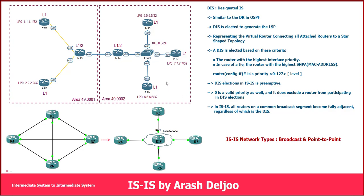In ISIS we use the term 'broadcast,' but actually this is the multi-access network. The reason is that ISIS is not really concerned about the capability of the data link layer of Ethernet technology to replicate broadcast. It's not relevant to broadcast per se, but rather to creating a communication environment in which multiple neighbors can be reached over the same interface and each router can talk to every other router on the link. We adhere to the ISIS standard terminology by using the term 'broadcast,' but the true meaning is more relevant to 'multi-access.'